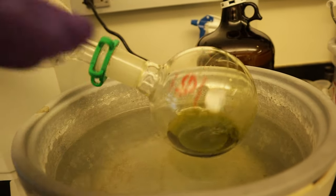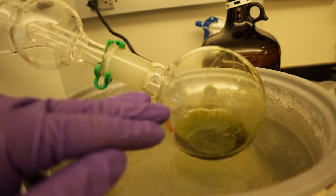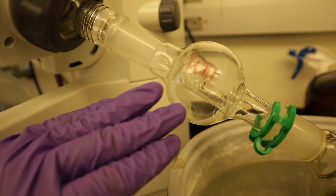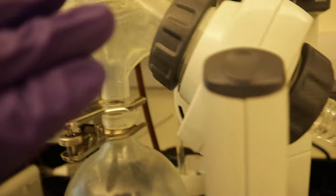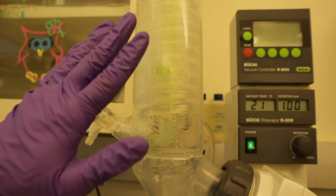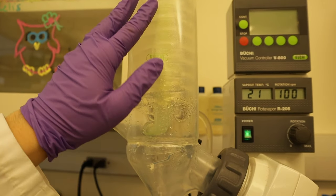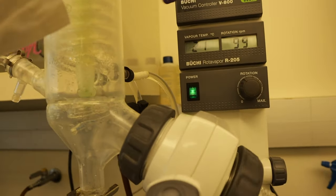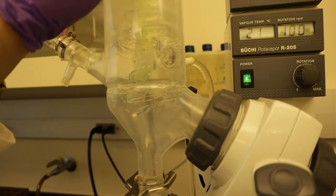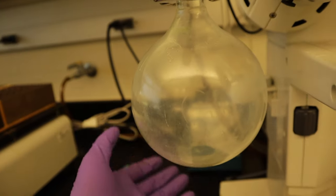The solvent contained in this round flask will evaporate here, then go here. In this part, the solvent that we use will be condensed because we have running water here. It will condense and all the solvent will be collected here.